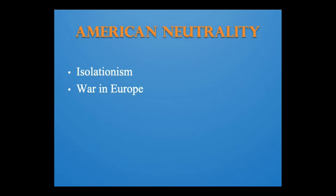Hitler immediately invaded Poland. Britain and France, allied with Poland, now declared war on Germany. Within a year, the Nazi Blitzkrieg, or Lightning War, overran Poland and much of Scandinavia, Belgium, and the Netherlands. By June 1940, German troops occupied Paris. Hitler now dominated Europe and North Africa, and in September 1940, Germany, Italy, and Japan formally created a military alliance known as the Axis.